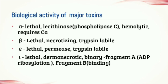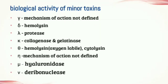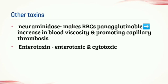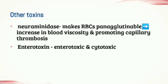Iota is the fourth major toxin, which is a lethal toxin as well as dermonecrotic. Iota is a binary toxin having two fragments: Fragment A, which helps in ADP ribosylation, and Fragment B, which helps in binding. Clostridium perfringens has eight minor toxins other than the four major toxins, with their biological activity given in the table. Other toxins like neuraminidase and endotoxin are also produced by this bacteria to protect itself from the host defense mechanism.